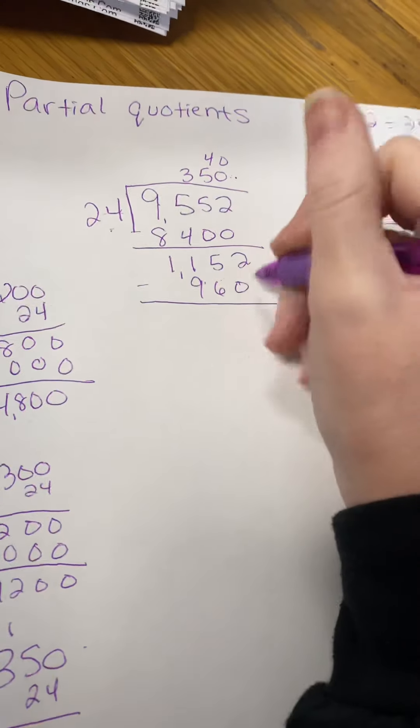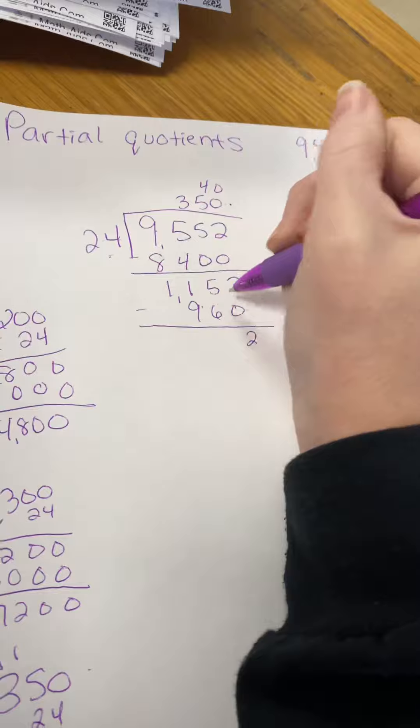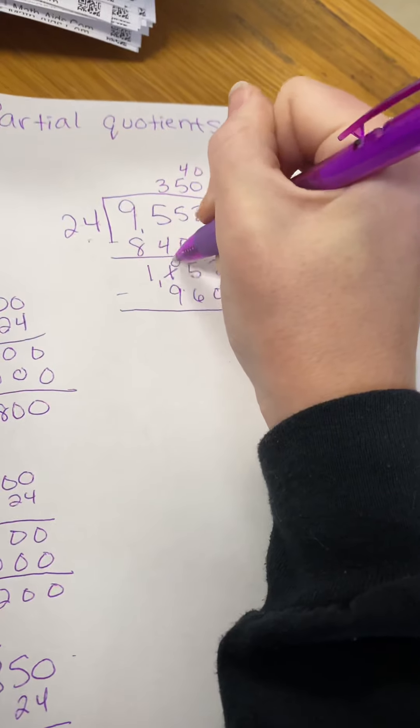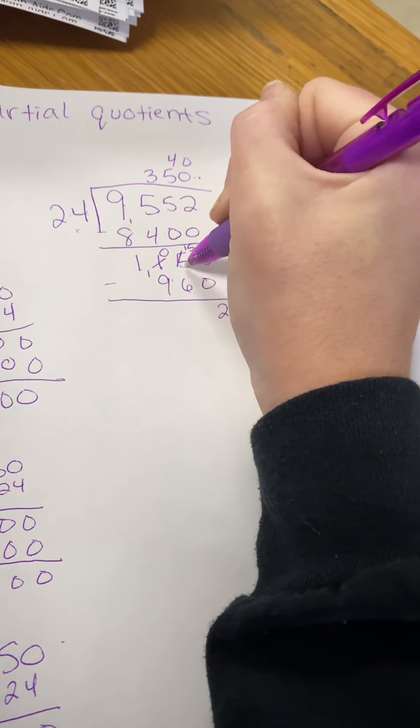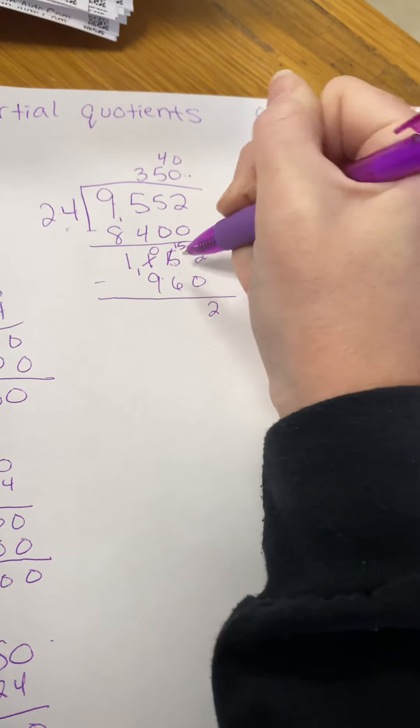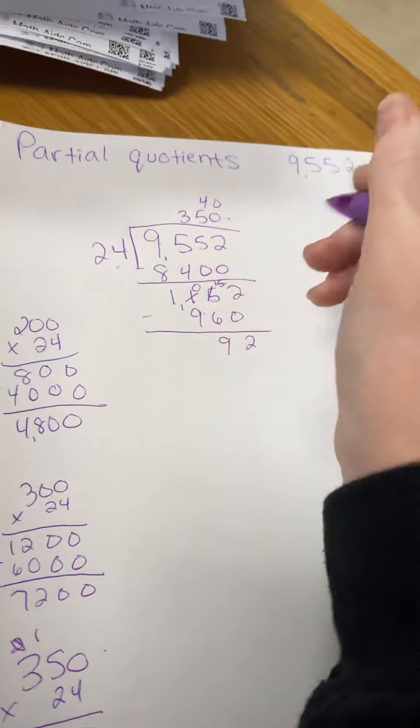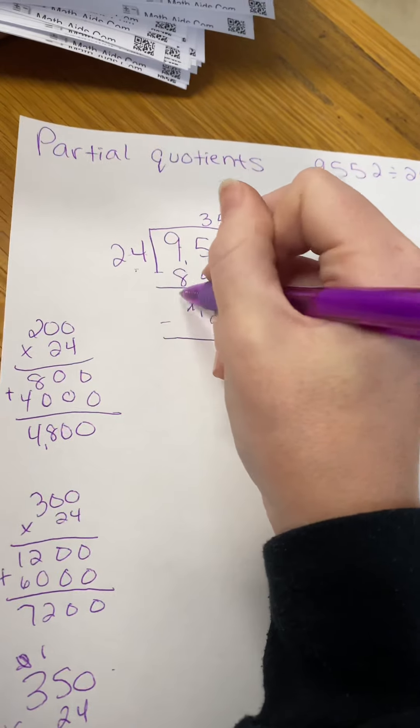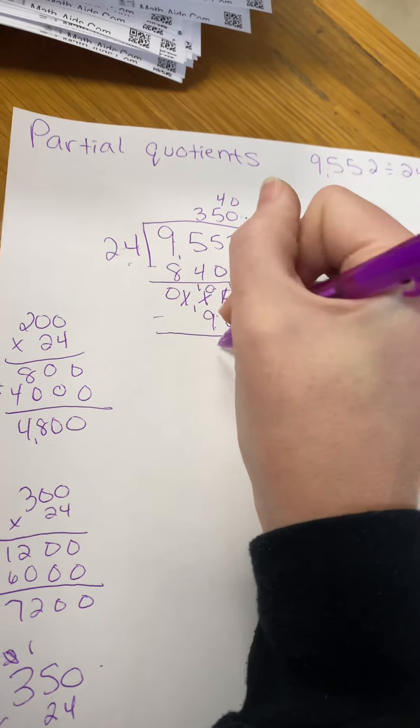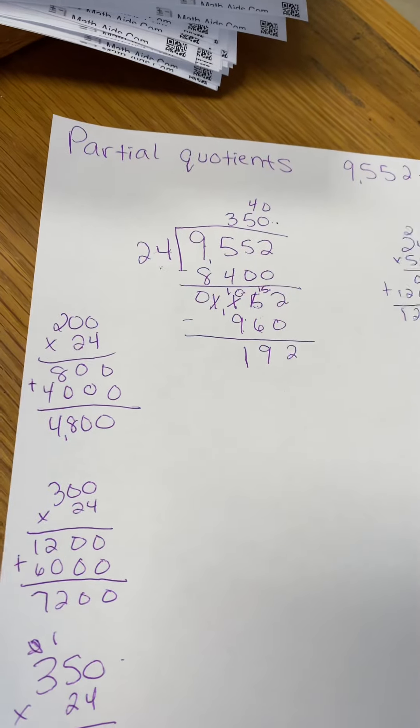Then you have to subtract. 2 minus 0, 5 minus 6, you can't do that. So you go next door and you borrow, making the 5 a 15. 15 minus 6 should be 9. 0 minus 9, you can't do that. You go next door and you borrow. 10 minus 9 is 1, 192.